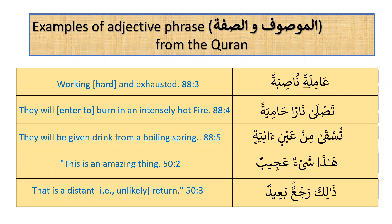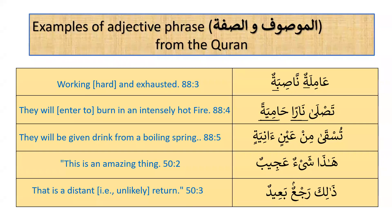In the next verse: 'Tasla naran hamiyatan' — they will enter a burning fire. Here 'naran hamiyatan' — nar is feminine in Arabic, so the adjective hamiyatun is also feminine. These are the small details to focus on. Naran is mansub and hamiyatan is also mansub — the adjective matches the noun. So we have three examples: amilatun nasibatun (marfu'), naran hamiyatan (mansub), and coming next, majrur.